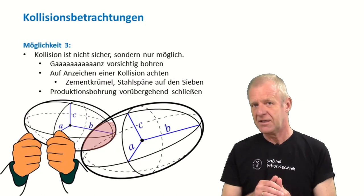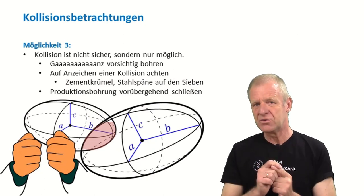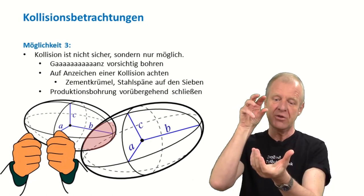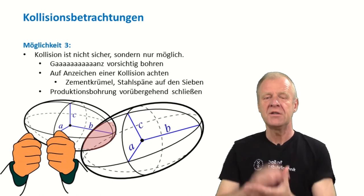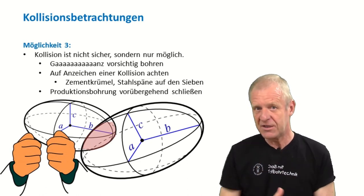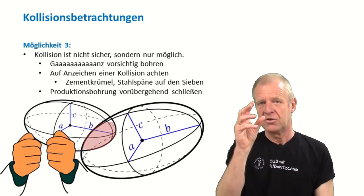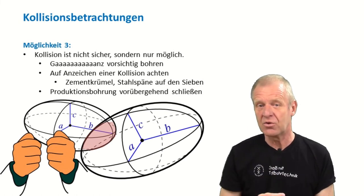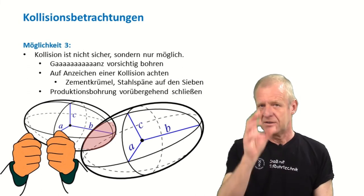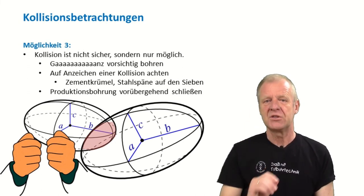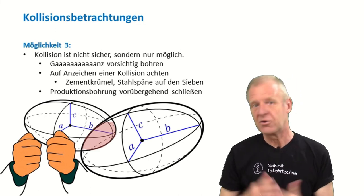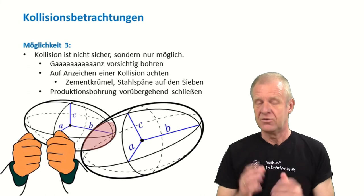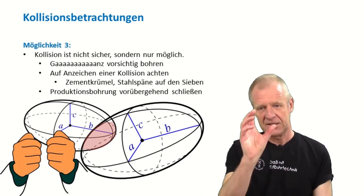Or we can simply take the risk — it's not certain we'll have a collision, it's just a certain possibility. So we can drill very, very carefully and slowly, and continuously check our shale shakers at the surface to see if there's any steel or concrete on the screens. That of course will be an alarm signal for us. As a further precautionary measure, we can also shut down the production in the neighboring wells, so that they do not produce any oil and gas while we are drilling nearby. All this contributes to minimizing our risk while we drill ahead.